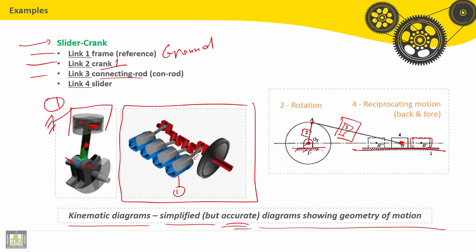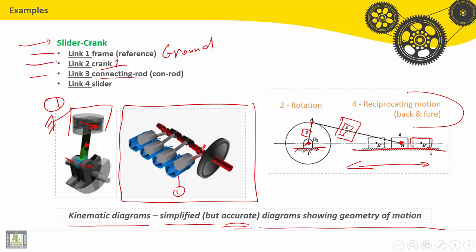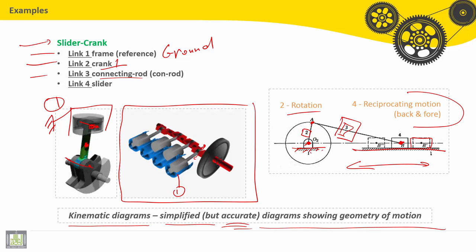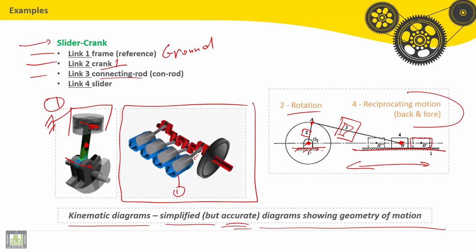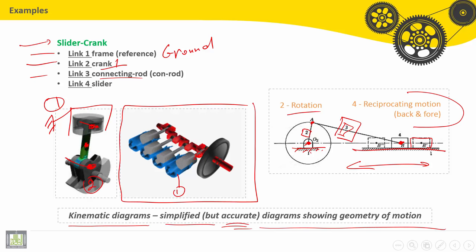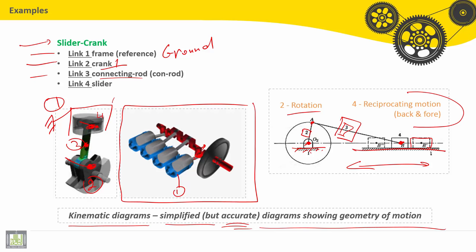The piston makes a reciprocating motion back and forth, while the crank makes a rotation. So link number one is the cylinder — the frame. Link number two is the crank, which has a revolute with the connecting rod. Link number three, the connecting rod, has a revolute with link number four, the piston. And link number four, the piston, has a translational motion with the ground.